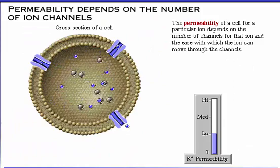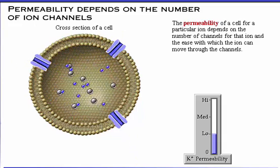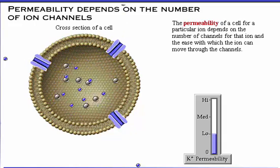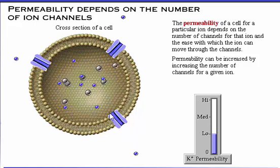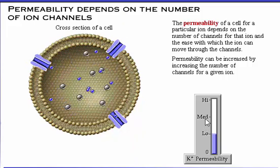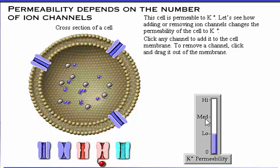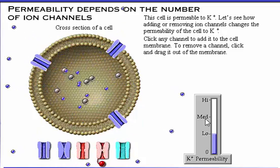The permeability of a cell for a particular ion depends on the number of channels for that ion and the ease with which the ion can move through the channels. For example, if an ion is small compared to the size of an ion channel, it goes through easily. Permeability can be increased by increasing the number of channels for a given ion. Let's see how adding or removing ion channels changes the permeability of the cell to potassium.